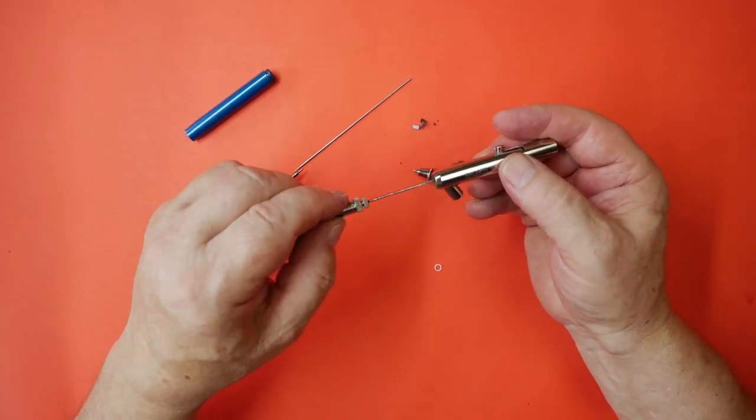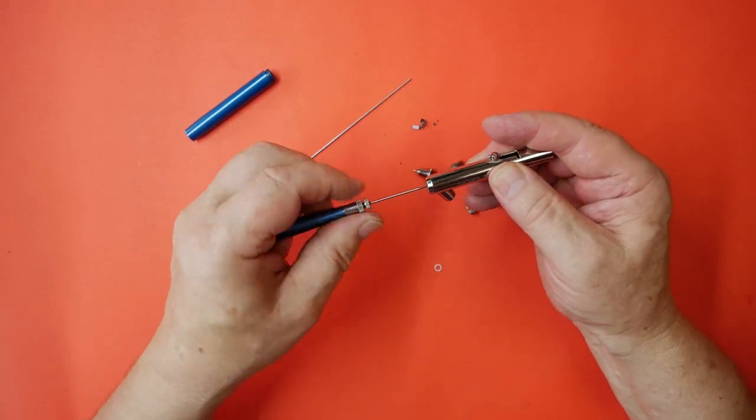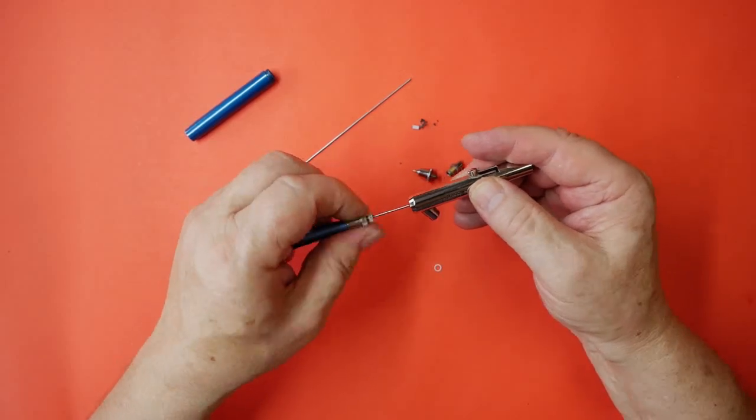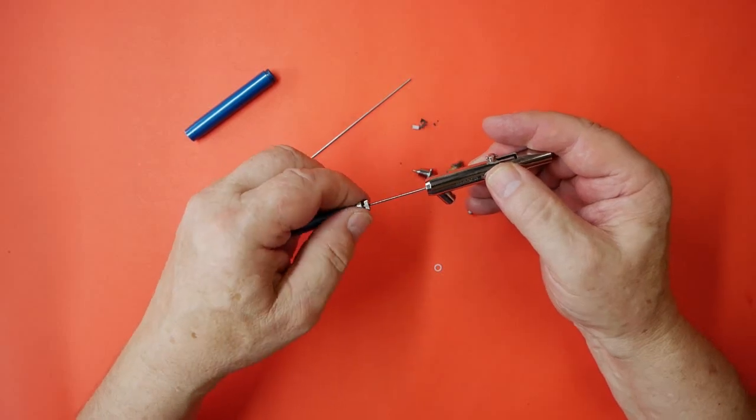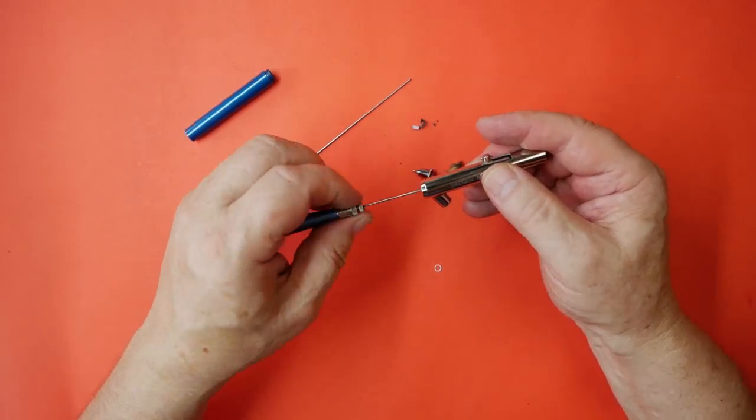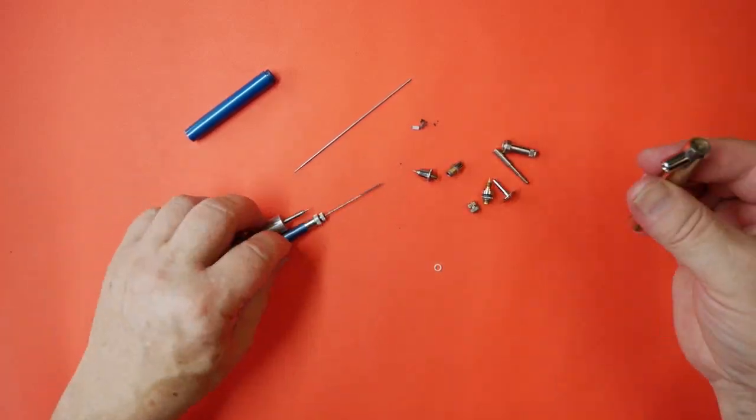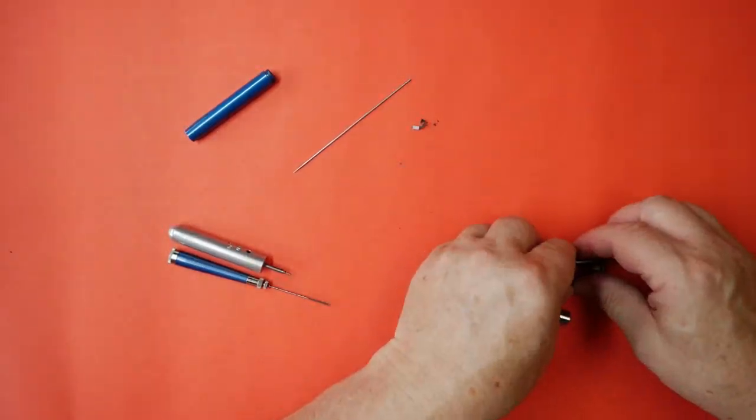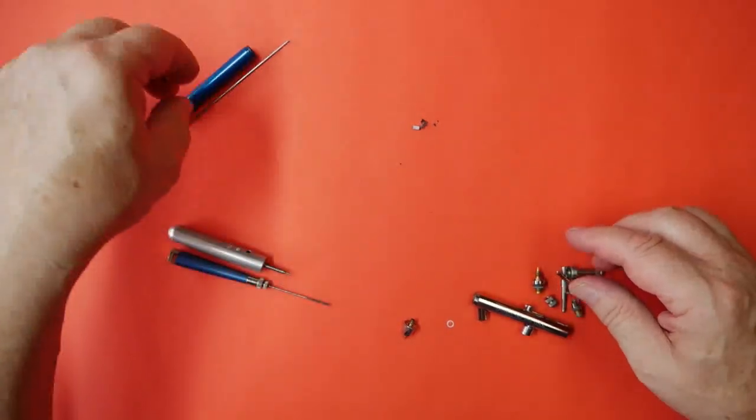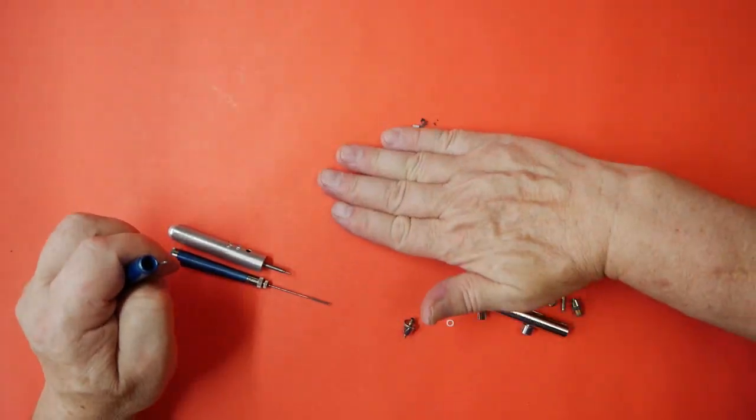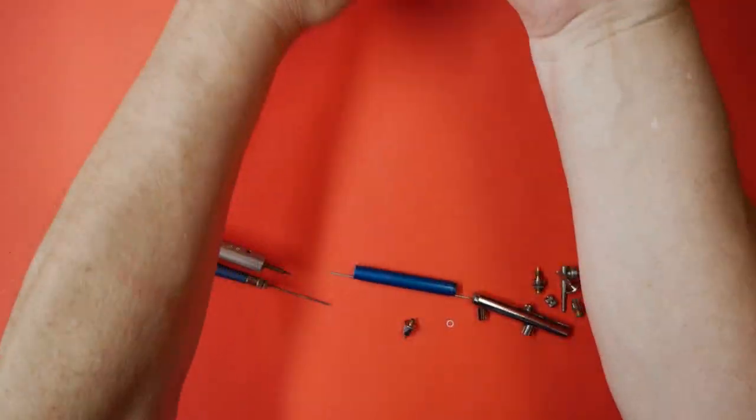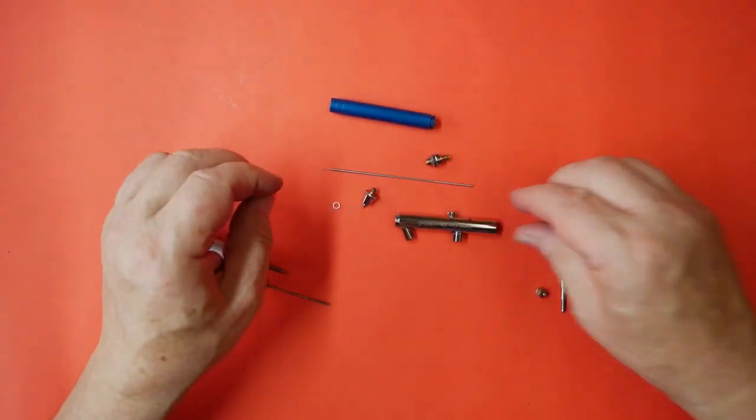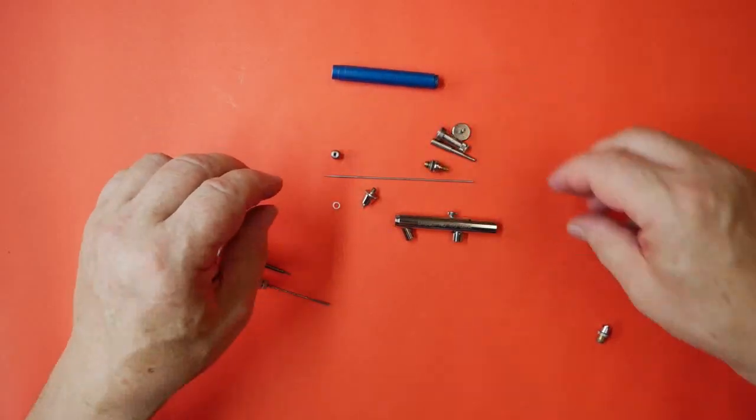Then I will use the reaming tool to ream out any burrs that may have been caused by fitting the needle bearing. And just because I don't like having all dirt and muck around, I shall just wipe this all to one side so we're working in a clean area. We don't want to go putting any of the dried paint parts back into the airbrush.